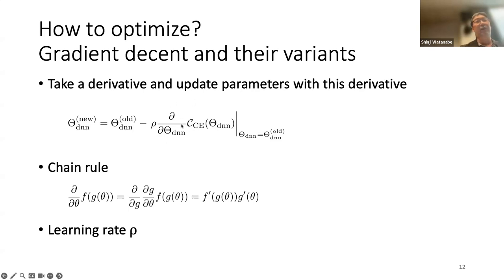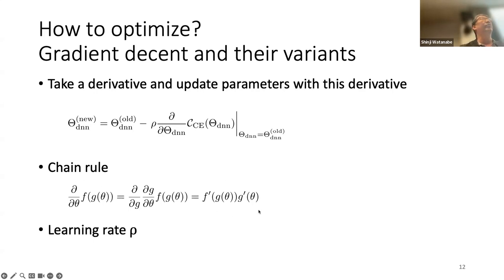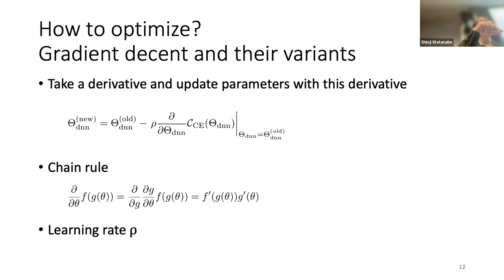The important part is computing the derivative. People usually use the chain rule to take the derivative of complicated functions. This is the most important part of gradient descent compared with maximum likelihood EM. For some algorithms, like Gaussian, after taking the derivative we can set it to zero and get a closed-form solution. Unfortunately, we cannot get a closed-form solution for most complicated functions, and CTC is applied to these very complicated functions.